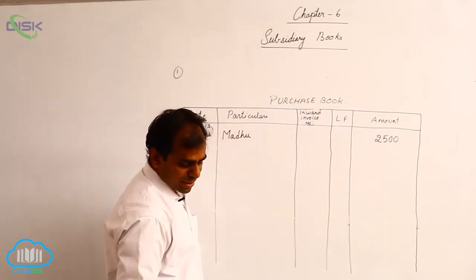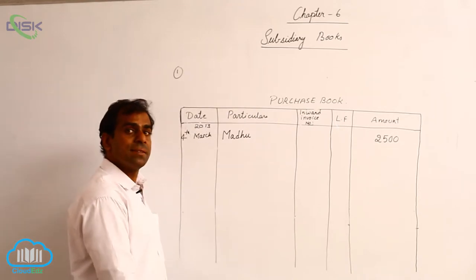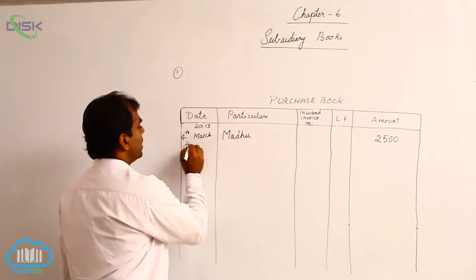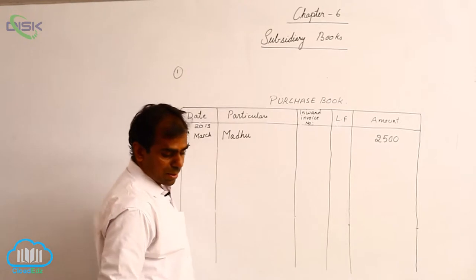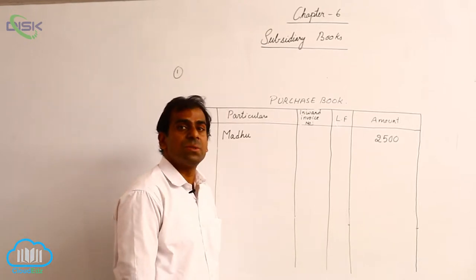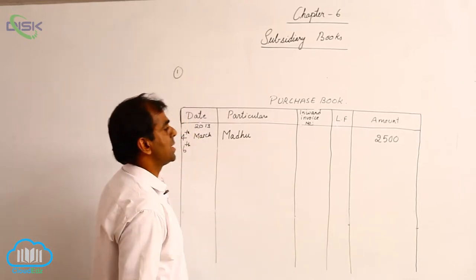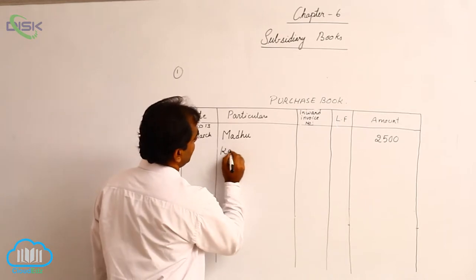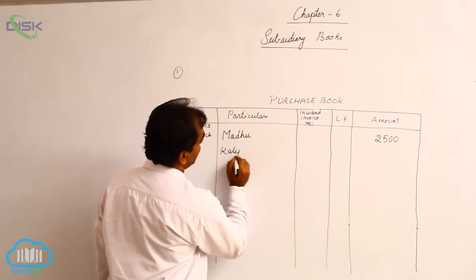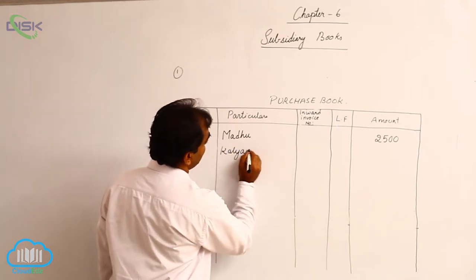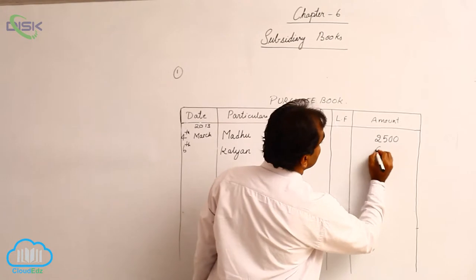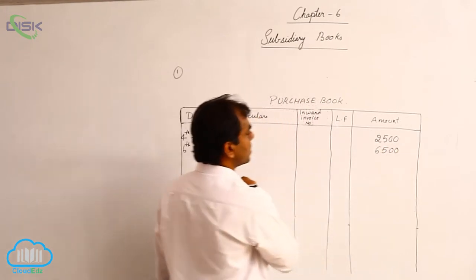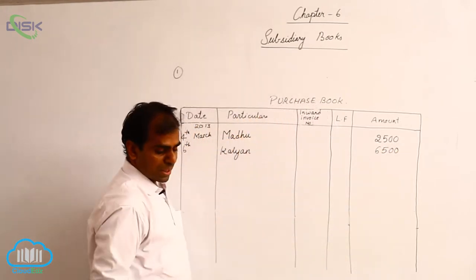The next transaction is on 6th March. Purchased goods from Kalyan, amount 6,500. So just mentioning the name of Kalyan in the particulars column and entering the amount 6,500 in the amount column.